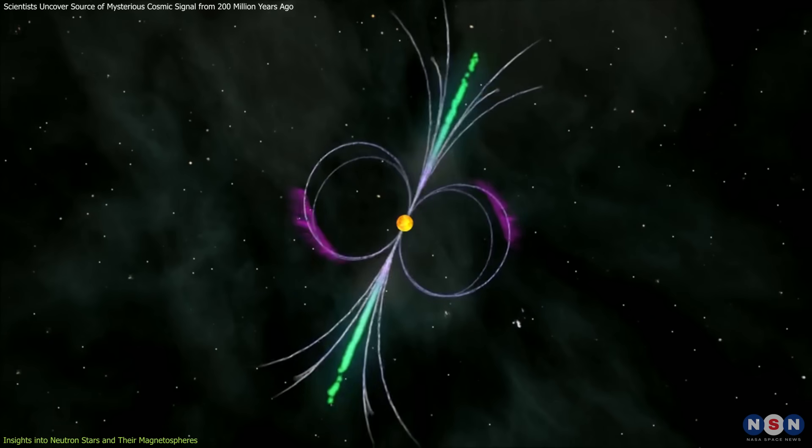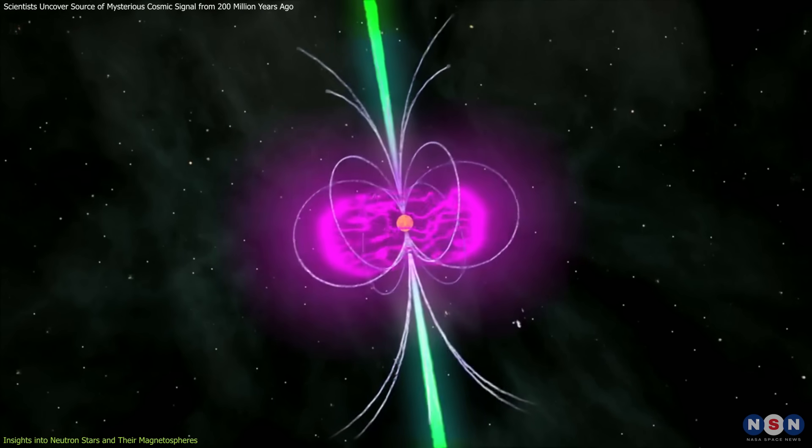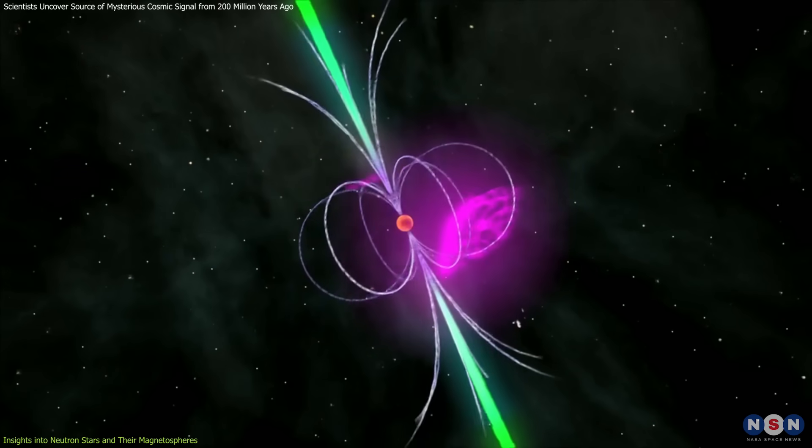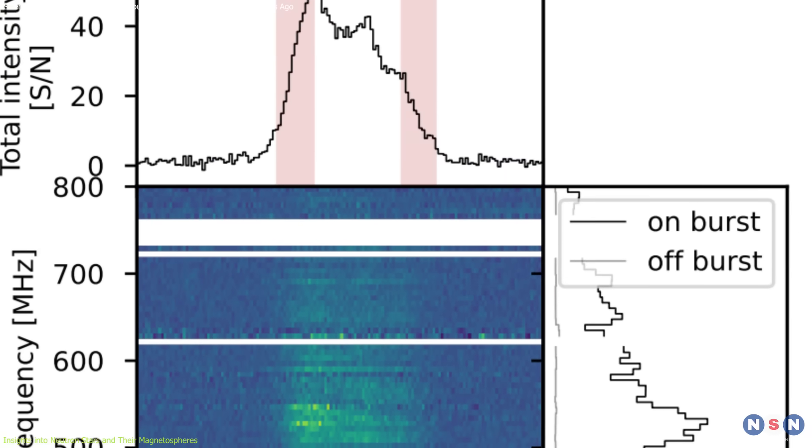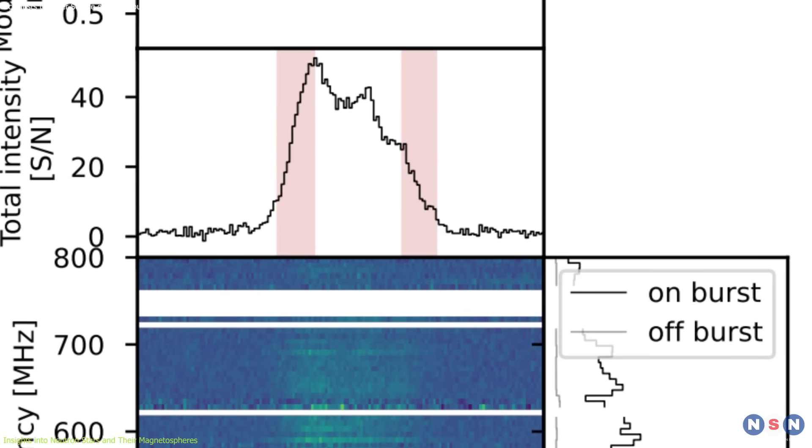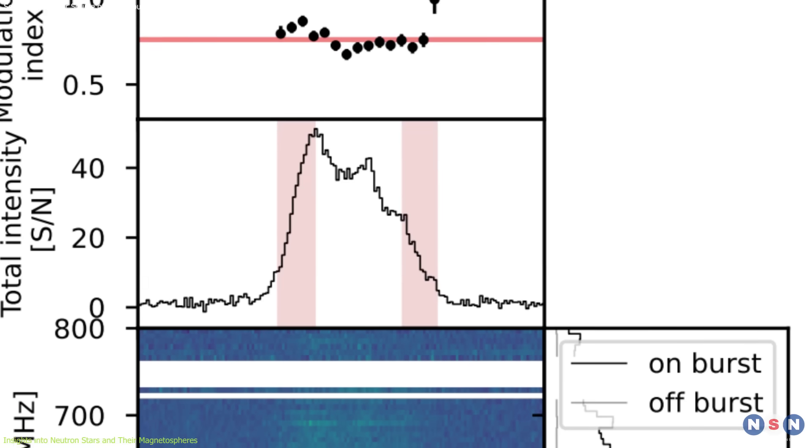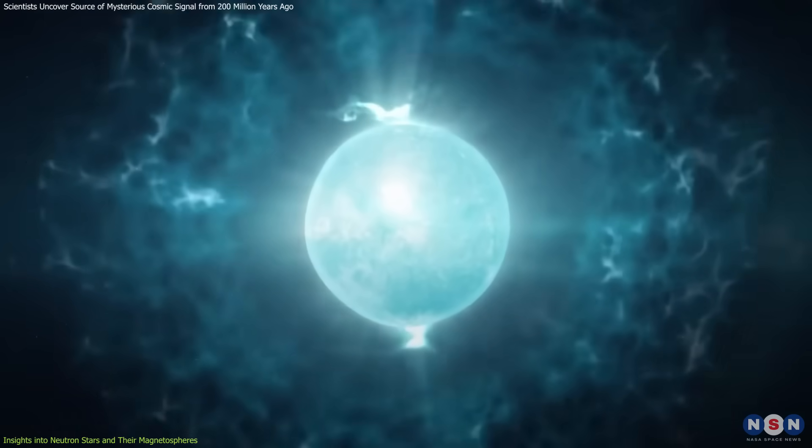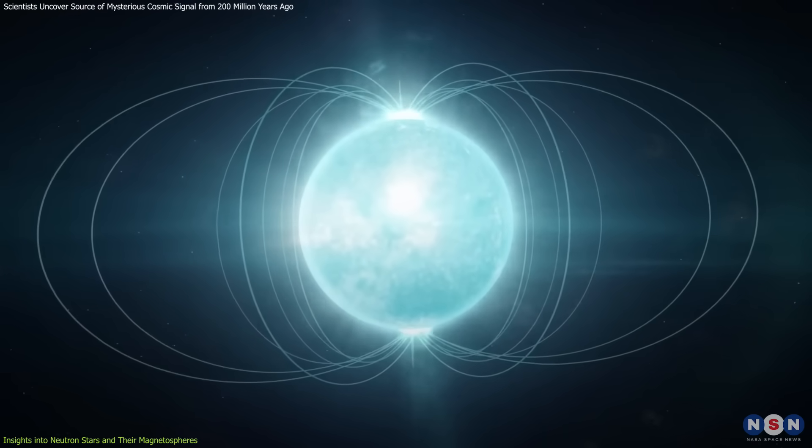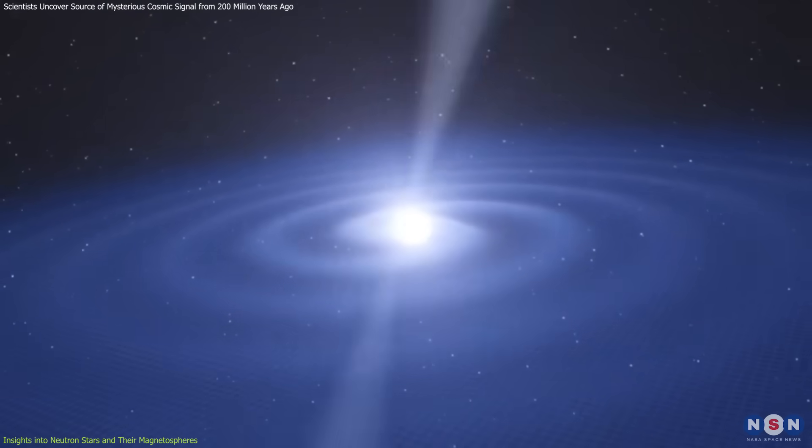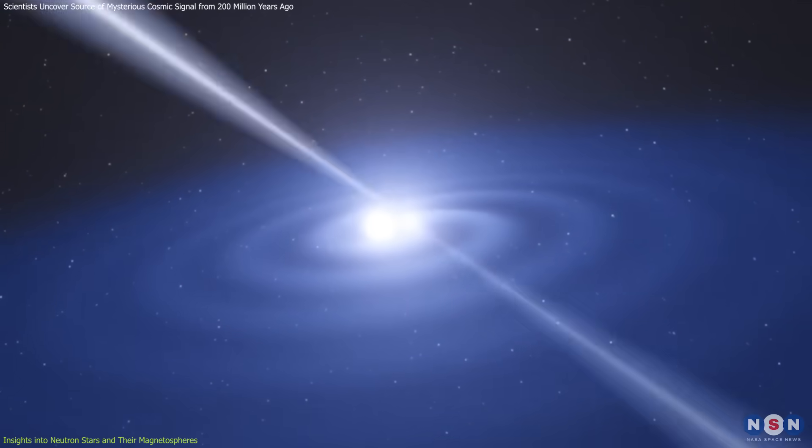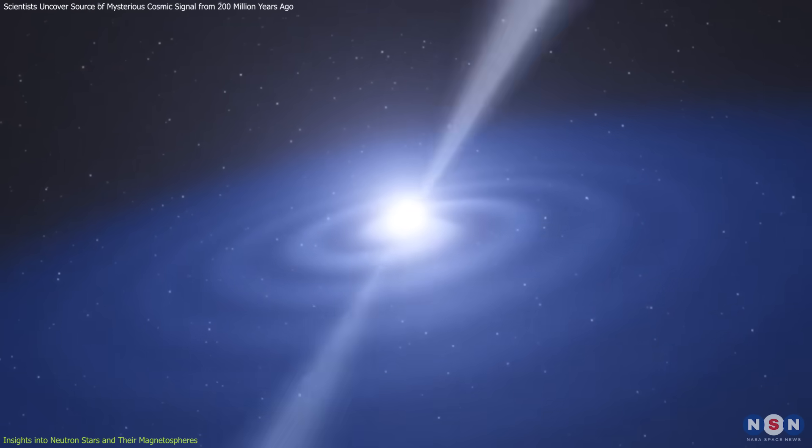Pulsars are beams of electromagnetic radiation that sweep across the cosmos like lighthouse beams. The polarization curve observed in this FRB aligns with the behavior of such rotating sources, further tying the burst to the magnetar's magnetosphere. This connection helps refine our understanding of how rotation and magnetism together produce these extraordinary cosmic signals.